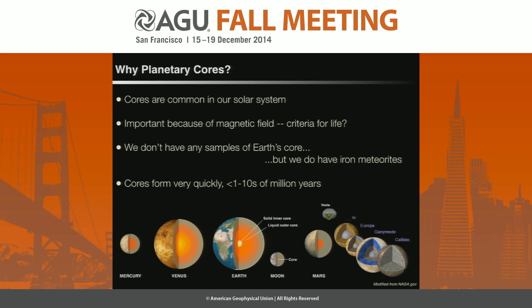Cores form very quickly, ranging in times from less than one to tens of millions of years, mostly depending on the size of the body. Small planetesimals may form cores and differentiate in a fraction of a million years in some cases, while larger terrestrial planet-sized bodies like Earth maybe took tens of millions of years — but it's still a pretty early and rapid process.